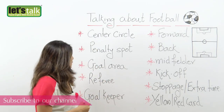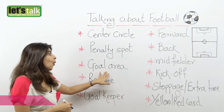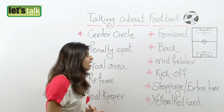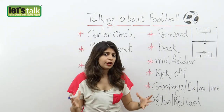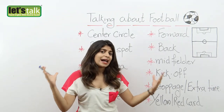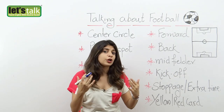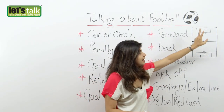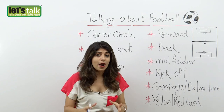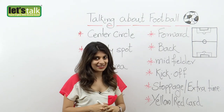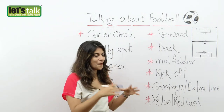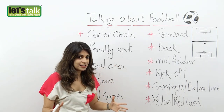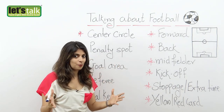Next we have goal area. Goal areas are rectangular areas on the side of the field at the front of the goals, right here. This is the goal area from where the goal kicks are taken. So we now have a basic idea about the football field.